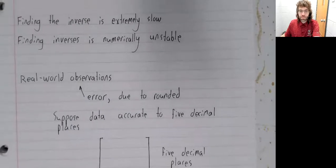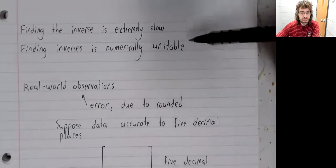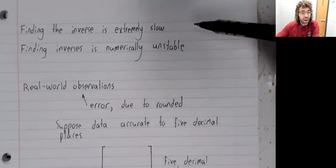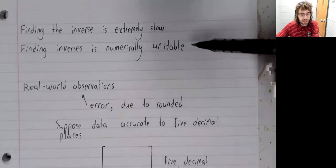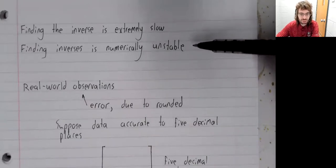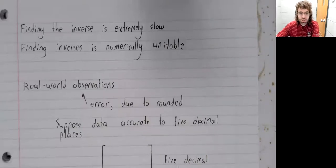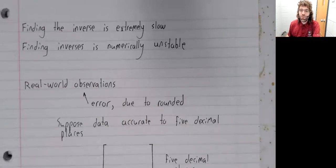So this is a pretty unappealing combination. Finding the inverse is slow. And once we do find the inverse, there's no guarantee that we've actually found the inverse due to rounding error. And for these two reasons, I feel very comfortable when saying that you should not be finding inverses in real world situations.